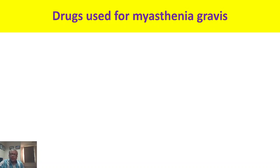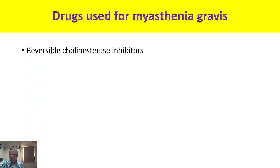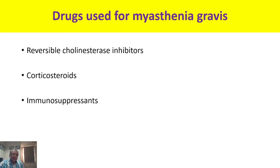This disease is progressive in nature, and a time will come when even the respiratory muscles become weak, ultimately resulting in morbidity and mortality. The drugs that can be used are: first, reversible cholinesterase inhibitors; second, corticosteroids because of their immunosuppressant action; and third, immunosuppressant agents.